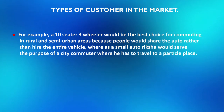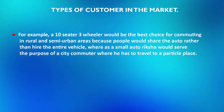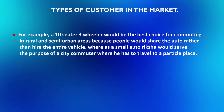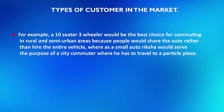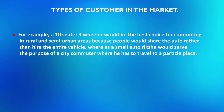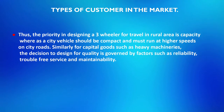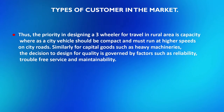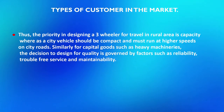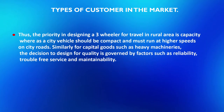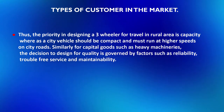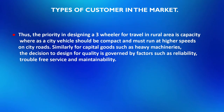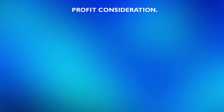For example, a 10-seater 3-wheeler would be the best choice for commuting in rural and semi-urban areas because people would share the auto rather than hire the entire vehicle. Whereas a small auto rickshaw would serve the purpose of a city commuter who has to travel to a particular place. The priority in designing a three-wheeler for rural areas is capacity, whereas a city vehicle should be compact and run at high speeds. For capital goods such as heavy machinery, design for quality is governed by reliability, trouble-free service, and maintainability.